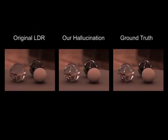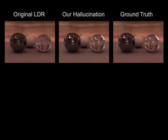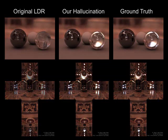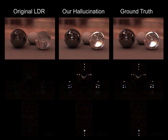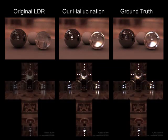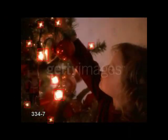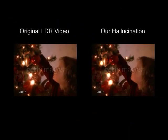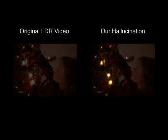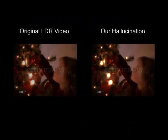We can also use our technique to hallucinate high dynamic range environment maps, and here is one example. Notice that our hallucinated result provides more faithful illumination than the low dynamic range environment map. Finally, our technique can also be applied for HDR video hallucination. The lights in the original video are overexposed, and we use our automatic Gaussian fitting for hallucination without any manual editing.